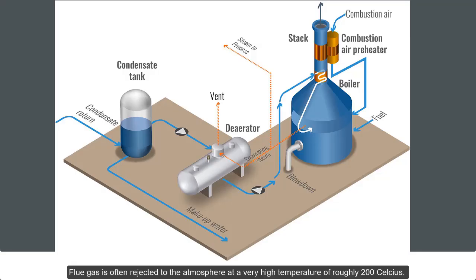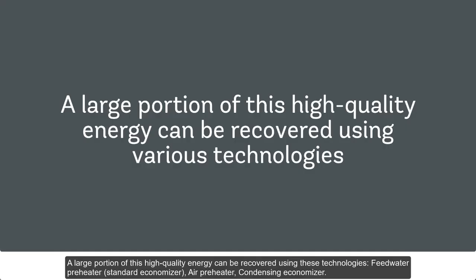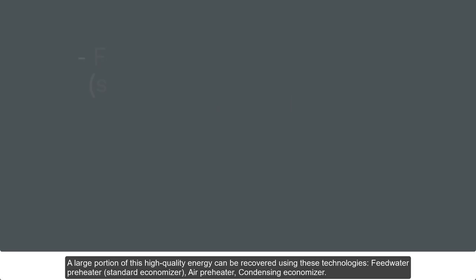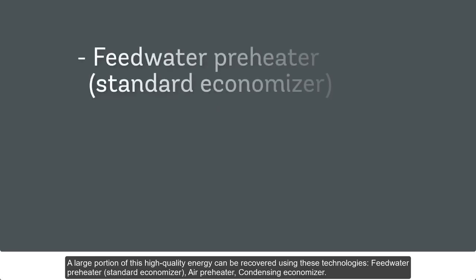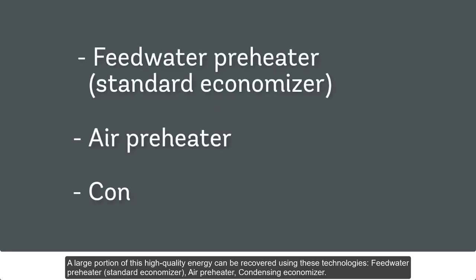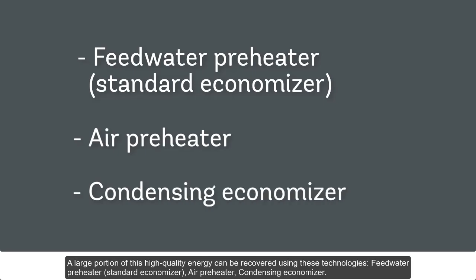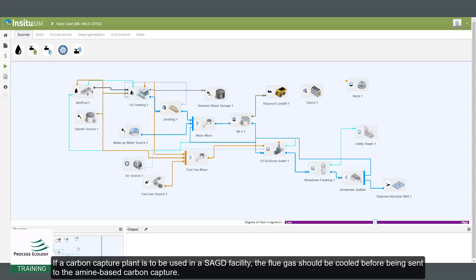Flue gas is often rejected to the atmosphere at a very high temperature of roughly 200 Celsius. A large portion of this high-quality energy can be recovered using these technologies: feed water pre-heater, standard economizer, air pre-heater, and condensing economizer.